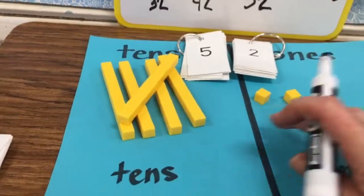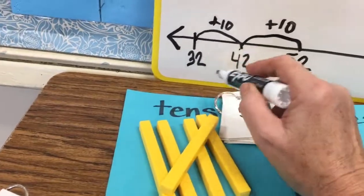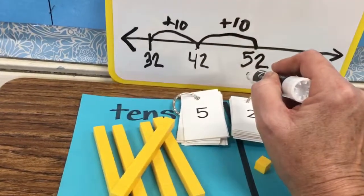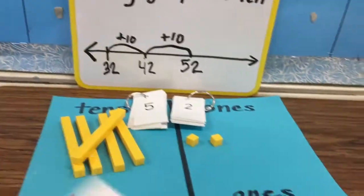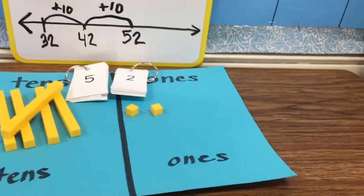I did nothing to my ones place. Three tens, then four tens, then five tens. If I were to continue on yet again, I could add another 10.